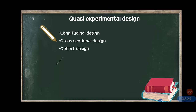Next is cross-sectional design. What happens in cross-sectional research design? We compare all the groups at one time — we make a comparison of different groups at the same point in time.